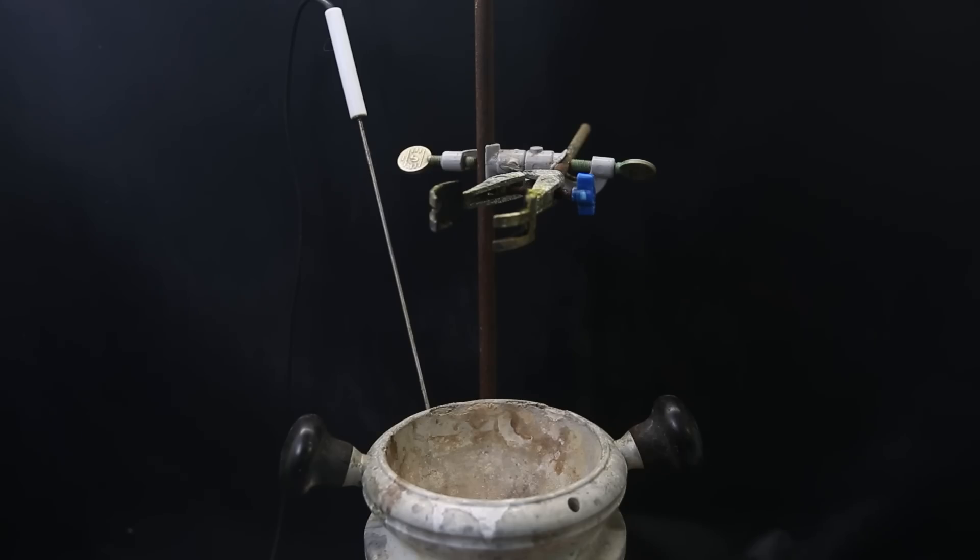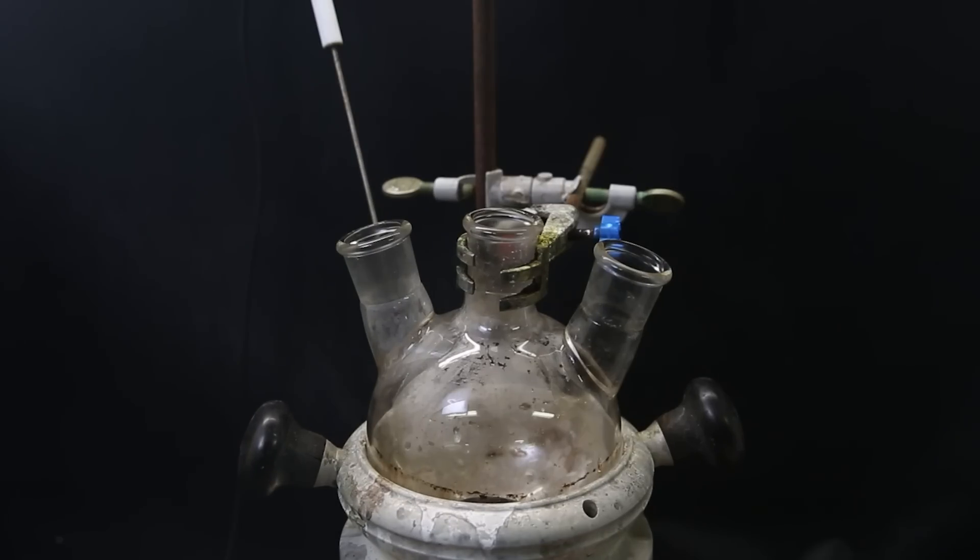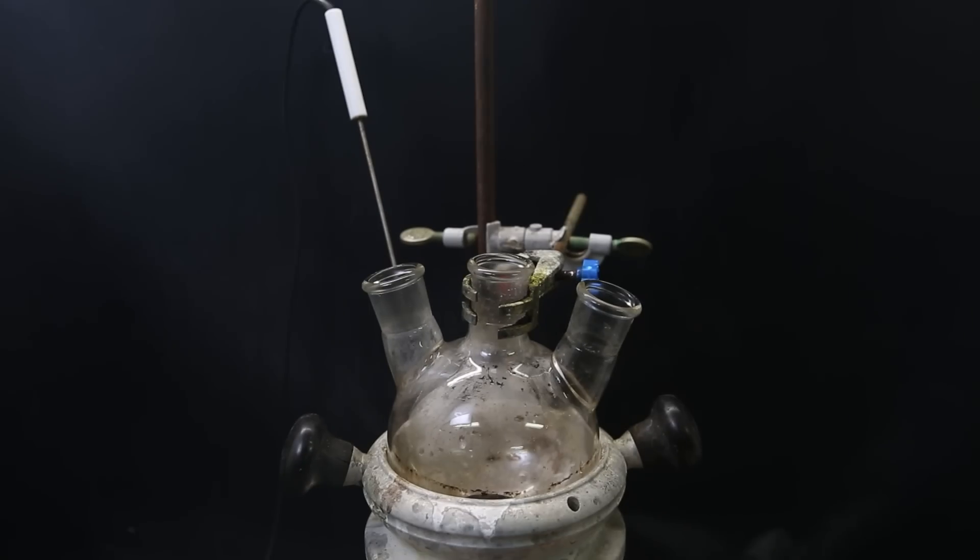To get started, I set up a heating mantle, and I will use a 1-liter 3-neck flask. It's still a bit dirty from some tar that doesn't want to come off, but for the reaction, it doesn't really matter. And afterward, it will have cleaned my flask, so it's a double win.